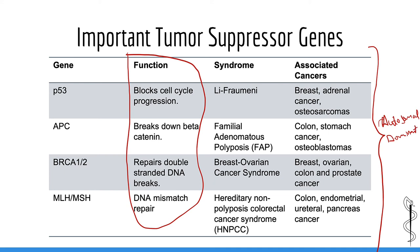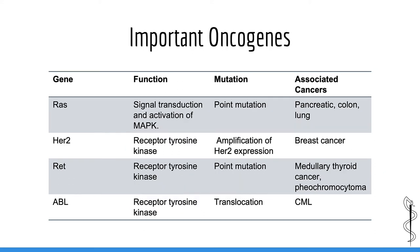Now let's take a look at some of the most common oncogenes. Out of all of these oncogenes, only the RET oncogene is associated with a familial cancer syndrome. Mutations in RAS, HER2, and ABL are almost always described in the context of somatic mutations — germline mutations in these oncogenes are extremely rare and are not a frequent cause of familial cancer syndromes. The RET mutation is the exception: it is associated with multiple endocrine neoplasia syndrome type 2 (MEN2), which causes medullary thyroid cancer, pheochromocytomas, and parathyroid hyperplasia, and is inherited in an autosomal dominant manner.